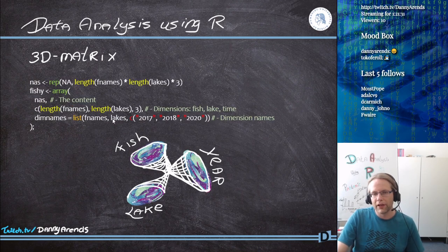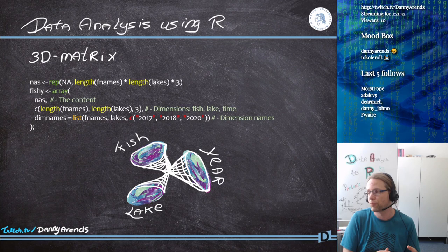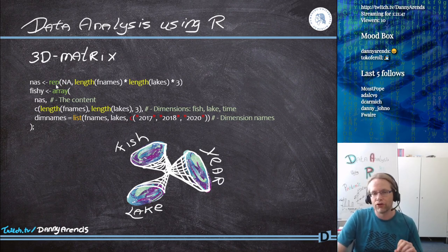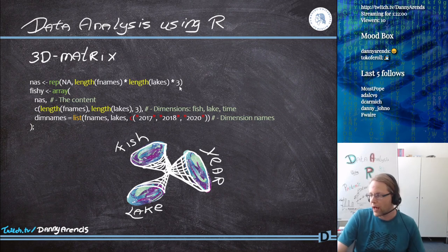A question to you: if we have 19 lakes and 26 types of fish and three different years, how many NAs do we need to put in? When you want to make a matrix like that, you need to figure this out beforehand. The way I did it is to make a nice three-dimensional matrix. First, I'm going to make a single vector — I call it get_DNAs — with all the values I want to put in. Initially I want an empty matrix, so I'm going to say repeat NA, take the length of F_names, multiply by the length of the lakes, and then multiply by three, which is the number of years. Then I'm going to use the array function.